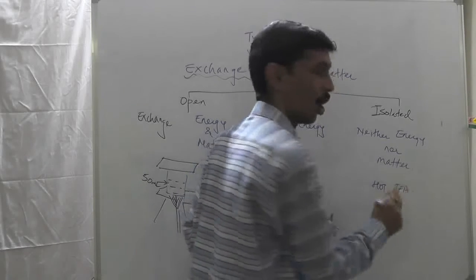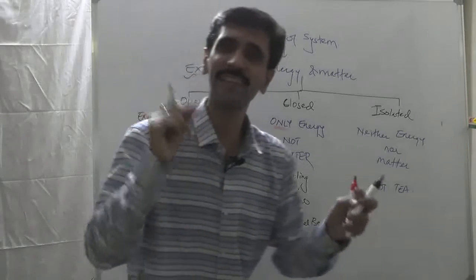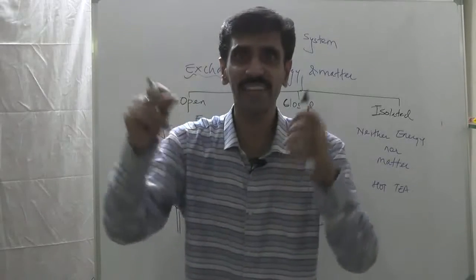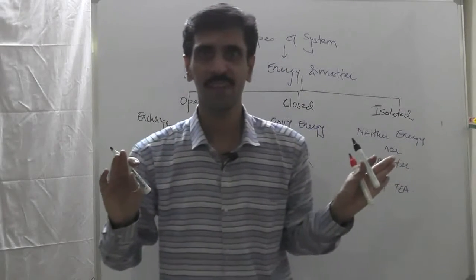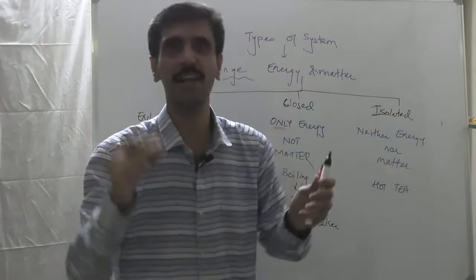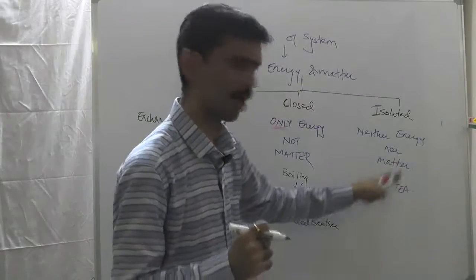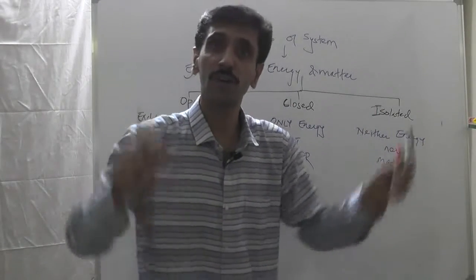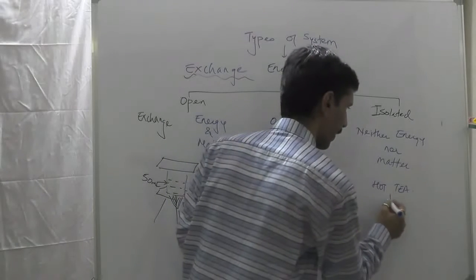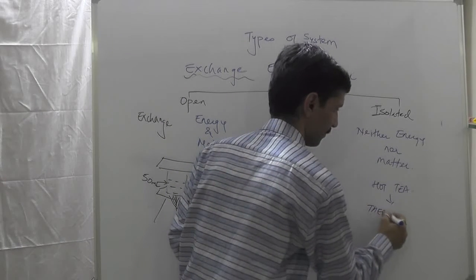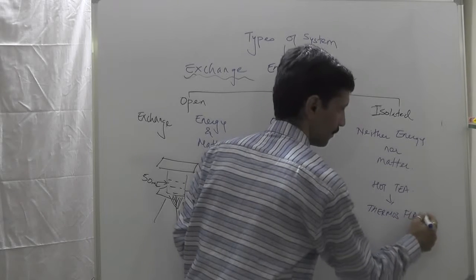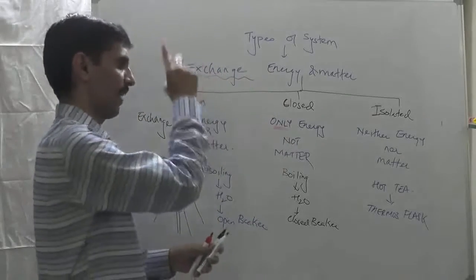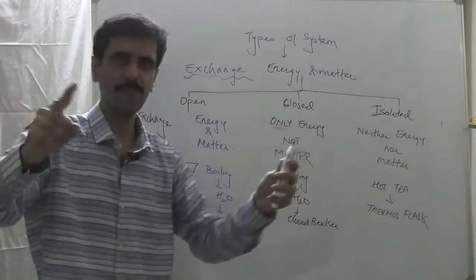Now you need to be very specific. Students write answers in such a way that they tell the examiner through their answer whether to give marks or not. You just can't write down hot tea. If I put hot tea in an open cup, can I call it as an isolated system? No. So you have to be very specific: hot tea in a thermos flask.